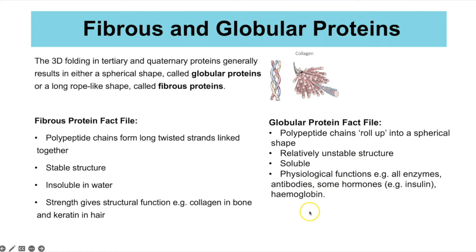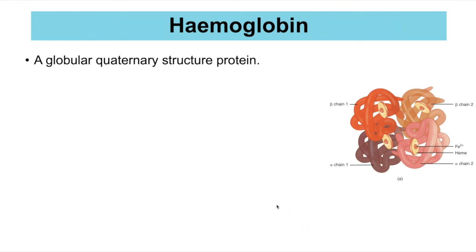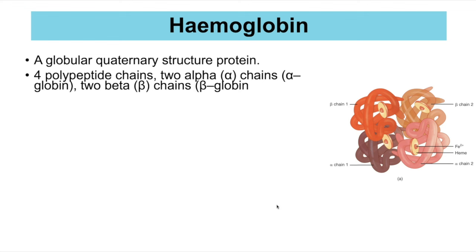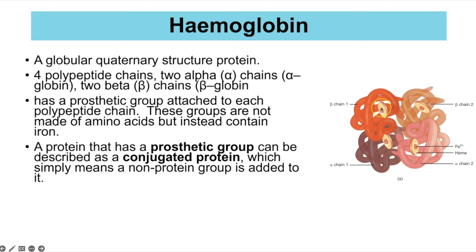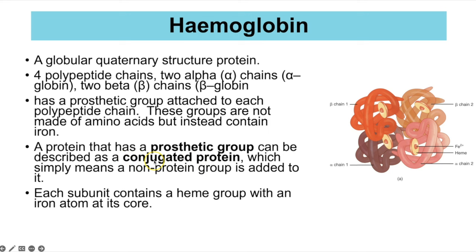Haemoglobin is a globular protein with a quaternary structure consisting of four polypeptide chains — two alpha chains and two beta chains. It has a prosthetic group called the haem group, making it a conjugated protein. The haem group contains iron, and it is the iron that oxygen binds to.